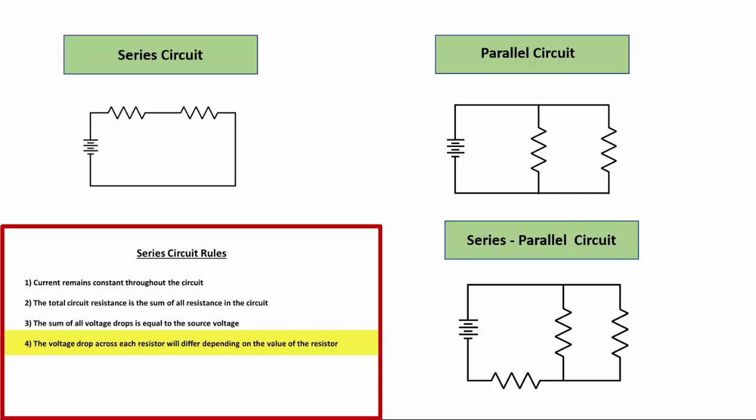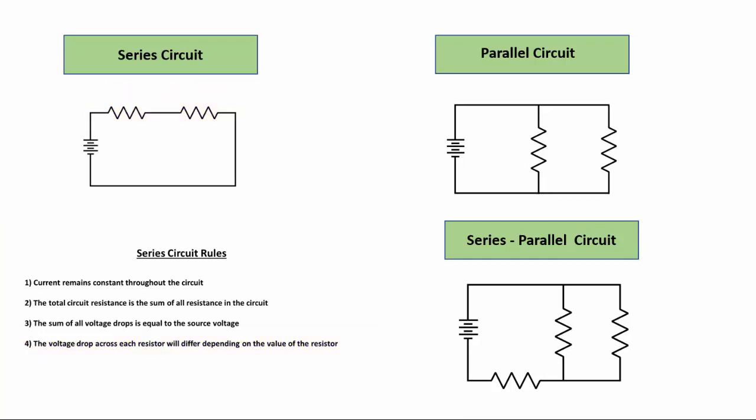Rule number four is a variation of rule three, defining that if the two resistors have different values, then the voltage drops for each would be different. For example, if the first resistor is 8 ohms and the second is 4 ohms, the first resistor gets more of the voltage because it has more resistance, and the second gets less, proportionally, because it's a smaller value. For more detail on series circuit rules, see the series circuit course.